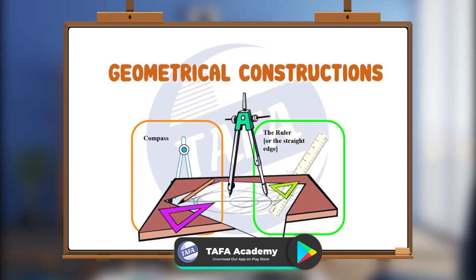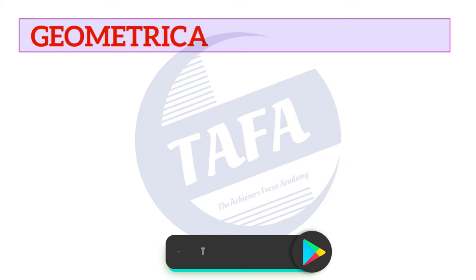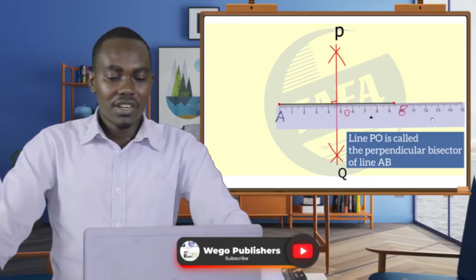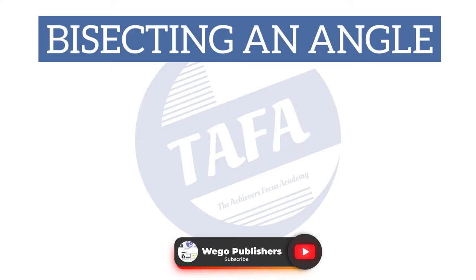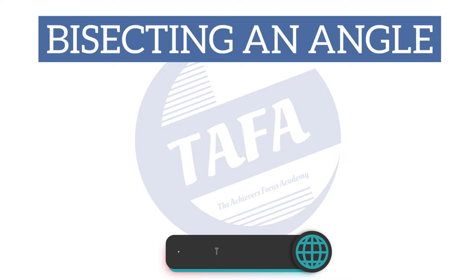The geometrical construction. We begin by defining what is a geometrical construction. Geometrical construction is the accurate drawing of plane figures. Now let us see how we can bisect an angle.